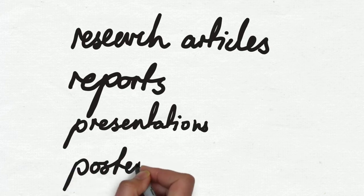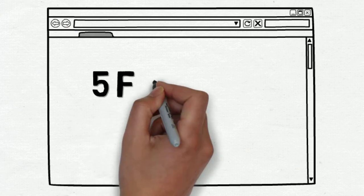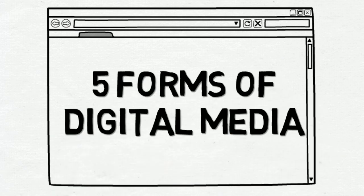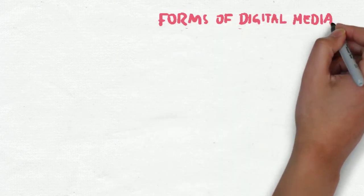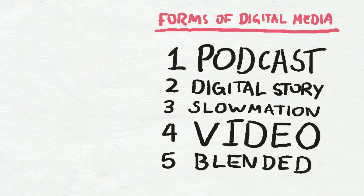But this website will help you to represent and communicate science using five forms of digital media that you create. These are a podcast, a digital story, a slow animation or slowmation, a video and blended media, which is a combination.